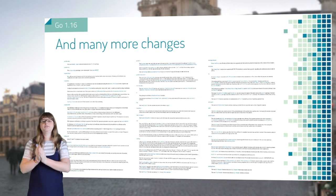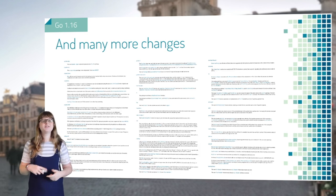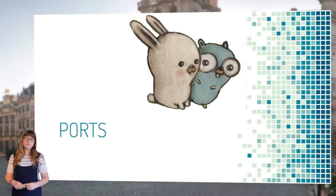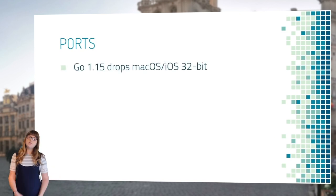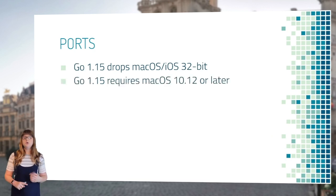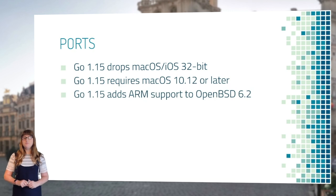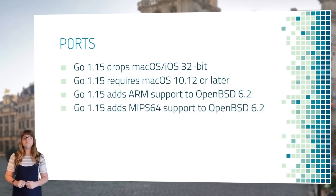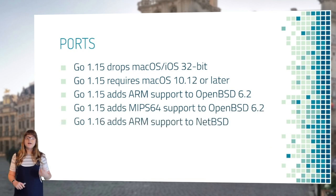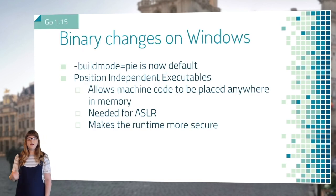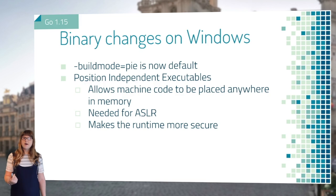There were many more changes we didn't have time to cover — the release notes are always the place to read more. Go runs on many platforms and keeps improving. Go 1.15 dropped support for macOS and iOS 32-bit, now requiring 64-bit processors, and requires macOS 10.12 or later. Go 1.15 added ARM support to OpenBSD and MIPS64 support. Go 1.16 added ARM support to the NetBSD port. On Windows, build mode PIE is now the default.